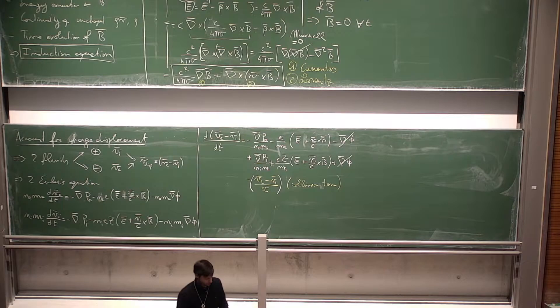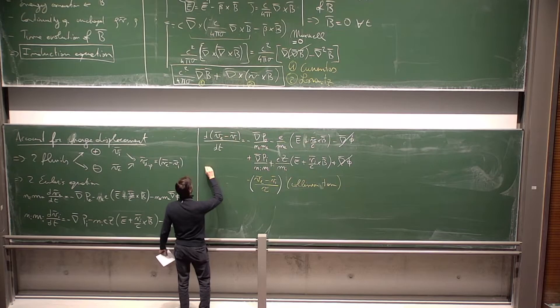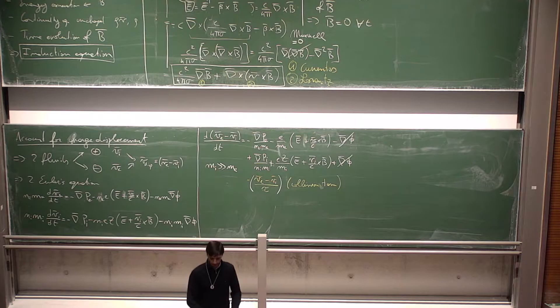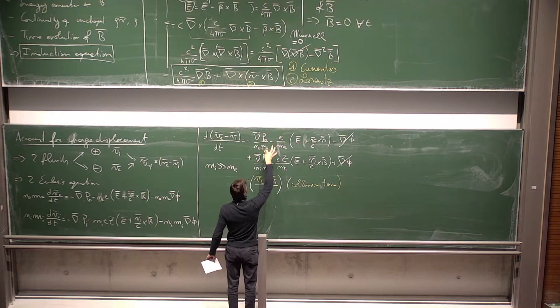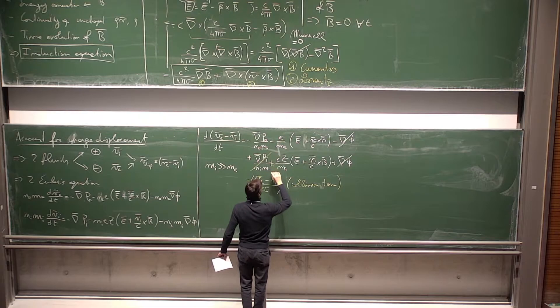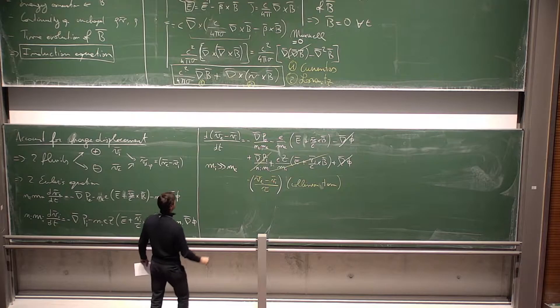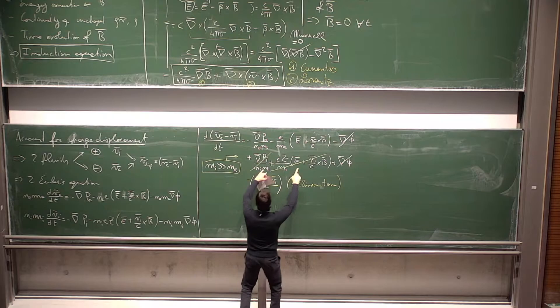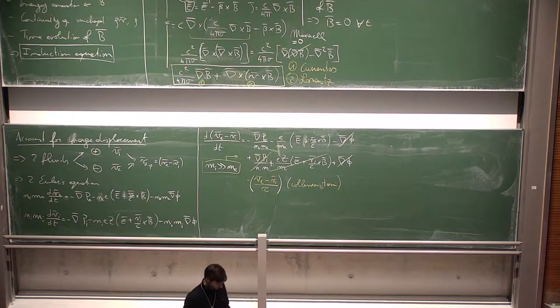We can simplify this equation because the mass of the ions is much larger than the mass of the electrons. Therefore we can drop the ion contribution to the drift equation — those terms are negligible compared to the electron terms. This is not a cancellation but a mass-ratio approximation.